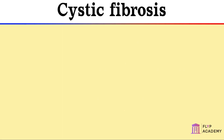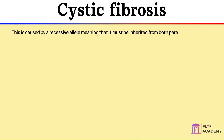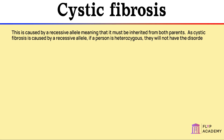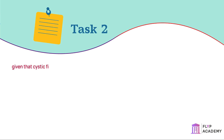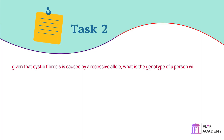The next genetic disorder we will look at is cystic fibrosis. This is caused by a recessive allele, meaning it must be inherited from both parents. If a person is heterozygous, they will not have the disorder but could unknowingly carry it. Task: Given that cystic fibrosis is caused by a recessive allele, what is the genotype of a person with cystic fibrosis? A person with cystic fibrosis would have two recessive alleles, shown as lowercase cc.